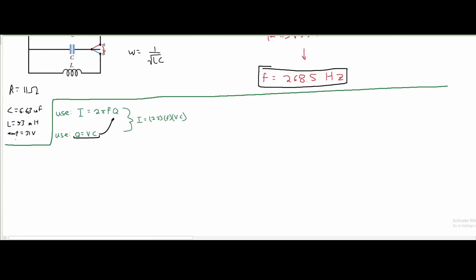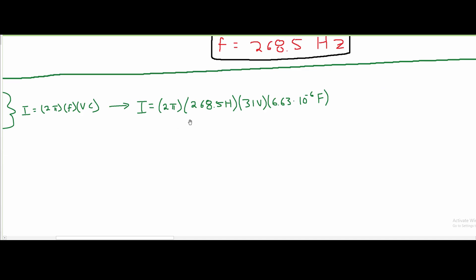is equal to 2 pi times the frequency times voltage times C. We have our F. We have our voltage, which is our EMF. And we have C, which is 6.63 microfarads. After we plug in all of our values,